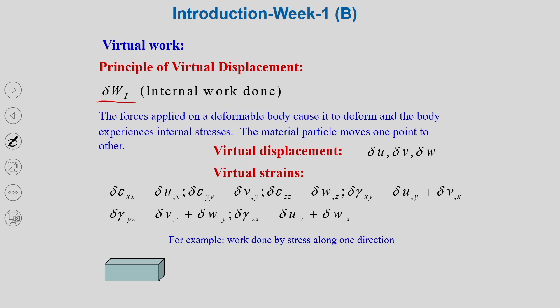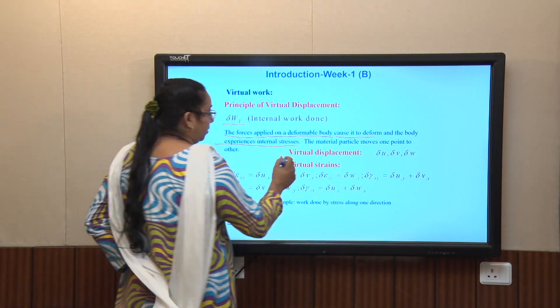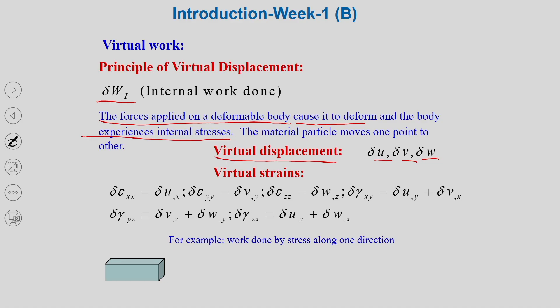Now we want to find the internal work done. When tractions or body forces are applied to the body, a resisting stress system is generated inside. The force applied on the deformable body causes it to deform; the body experiences internal stresses and material particles move. The virtual displacements are delta u, delta v, delta w. The corresponding virtual strains are: delta epsilon xx equals delta u comma x, delta epsilon yy equals delta v comma y, delta epsilon zz equals delta w comma z, and shear strain delta gamma xy equals delta u comma y plus delta v comma x.